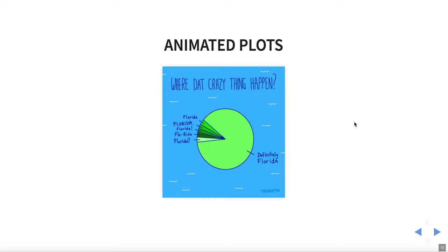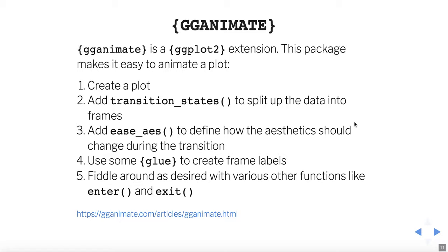After showing you how to make interactive plots, we're going to look at how to make our plots move — how to make animated plots. The ggAnimate package, an extension for ggplot2, makes this incredibly easy as well. The steps are: one, create a plot as we've been doing for a few weeks; then add a transition state to say how to split the plot into different frames. The ease_aes deals with transition aesthetics. Glue helps with frame labels, and you could also mess around with enter and exit parameters to make the animation flow the way you want.